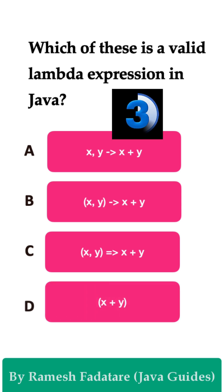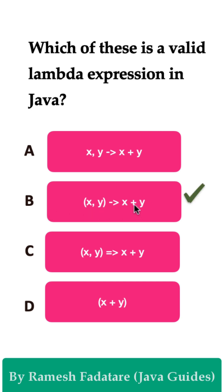Answer B is correct because this is a valid lambda expression. Whenever you have more than two parameters in a lambda expression, these parameters should be included in a parenthesis, followed by a lambda symbol (the arrow operator), and then followed by the lambda body. This is the correct syntax of a lambda expression.